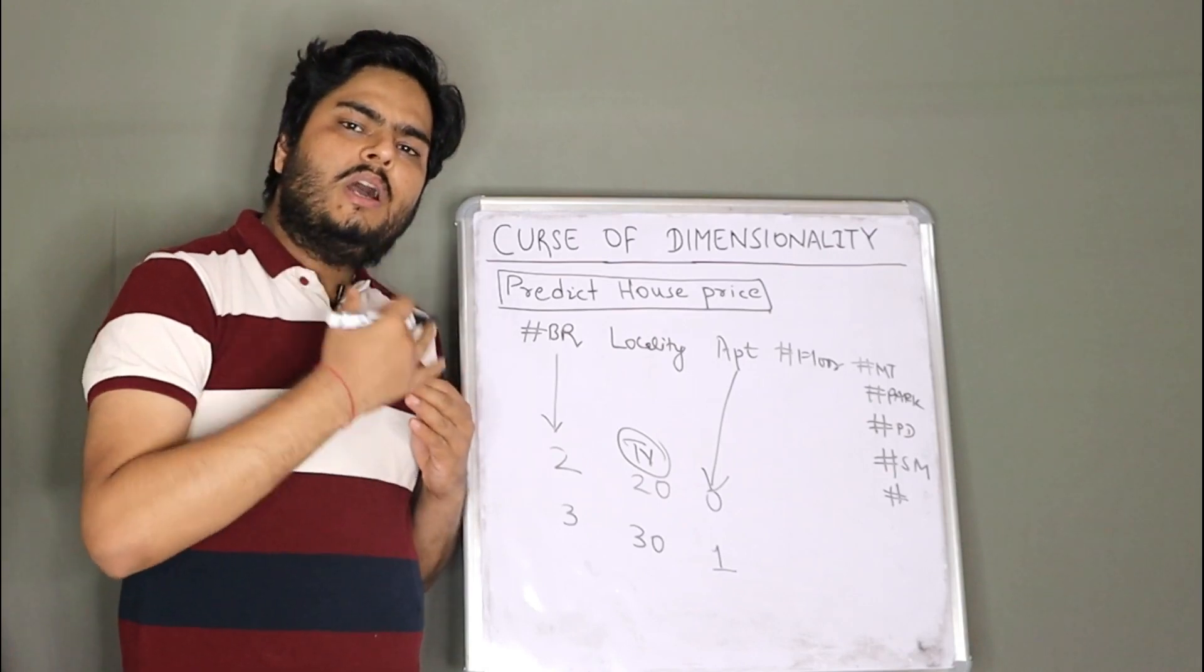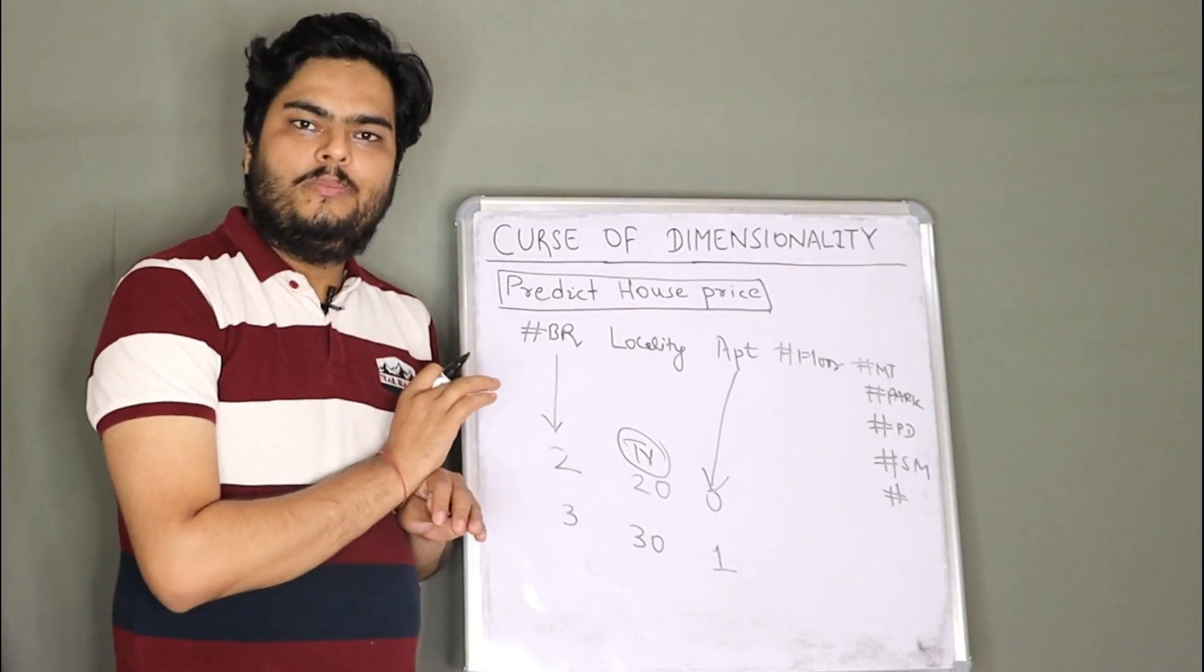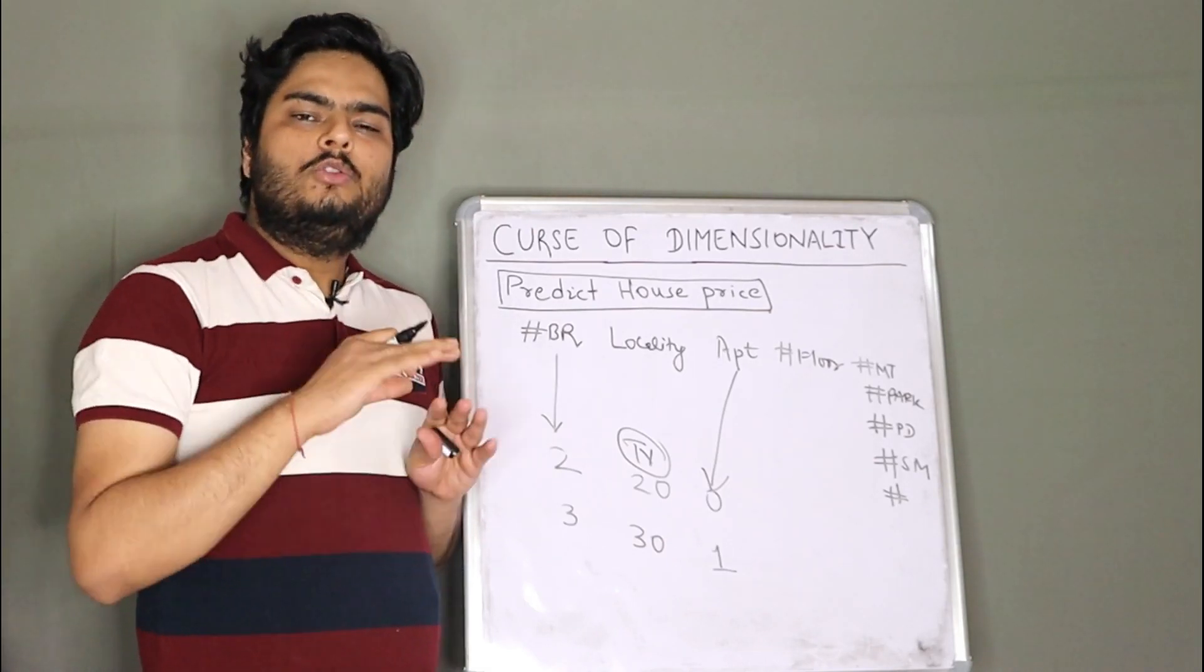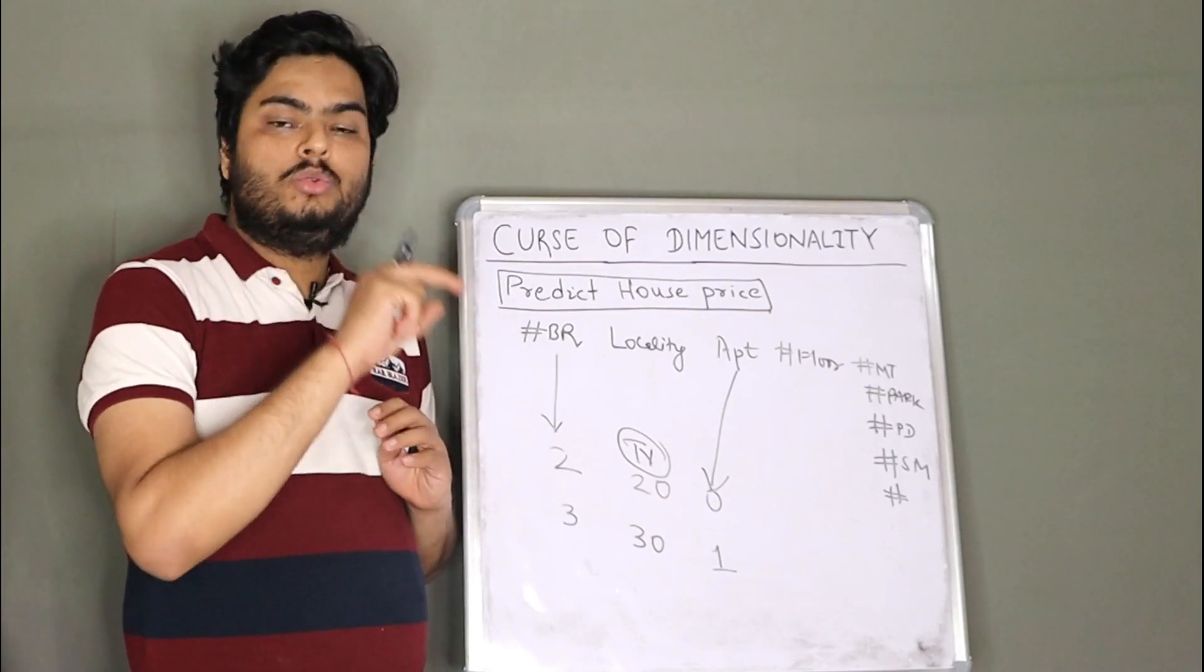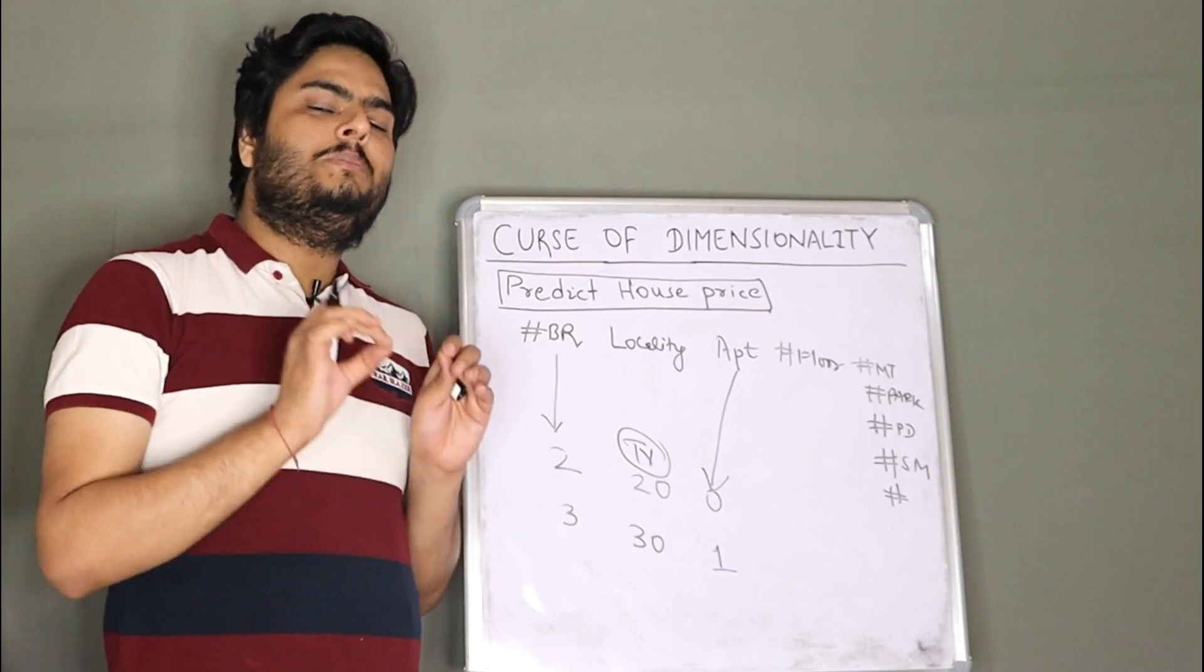But in real world, up to 20, 30, 40 features, it is useful for the model. But if you increase it like 100, 200, 500, those features might not add much value to the model. And that is what we call curse of dimensionality.